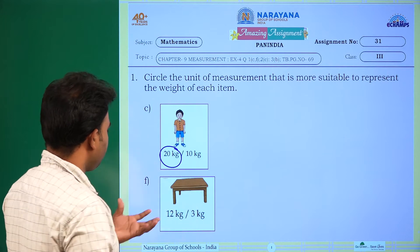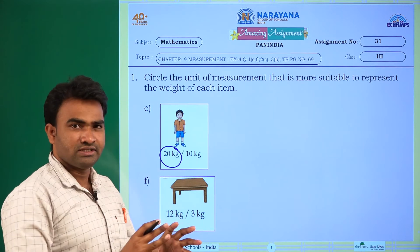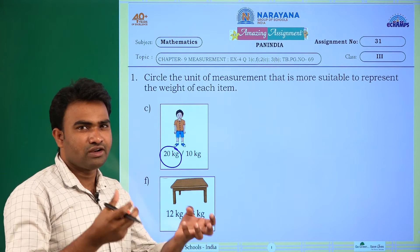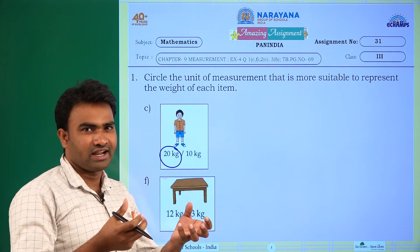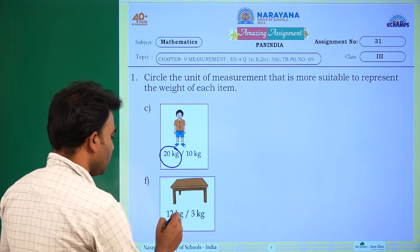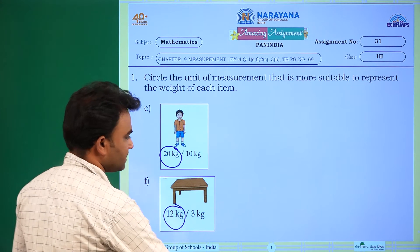Next one, table. Table is 12 kilograms or 3 kilograms. We cannot lift the table directly, right? So 12 kilograms it is, circle it.